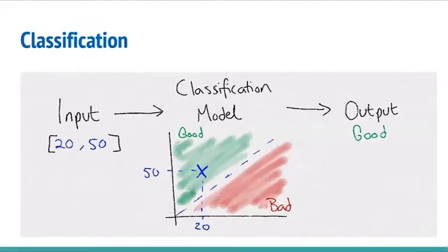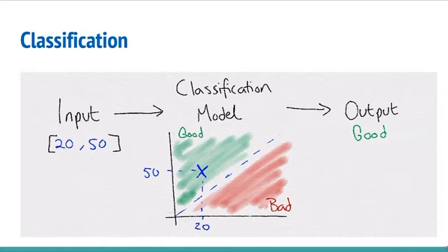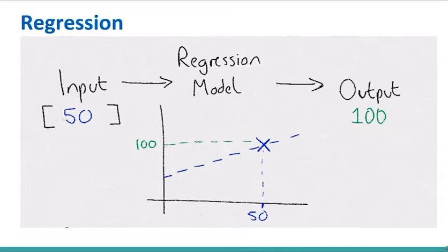In machine learning, classification handles classifying items into appropriate groups, and we also do prediction problems — a regression problem. In the classification example there's a boundary where one group is distinct from the other. So in supervised learning we handle both classification tasks, where the output is categorical, and regression tasks, where the output is a numerical prediction.